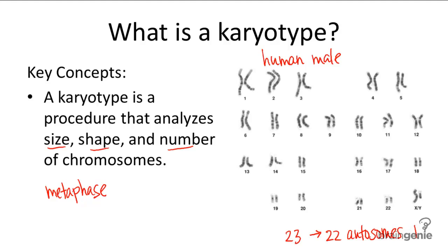One pair is the sex chromosomes right here. You can tell this is a male human because there is an X and Y chromosome present. This is the X, this is the Y, and notice how the Y is a lot smaller. In females, there would be two X chromosomes present.